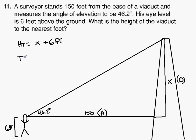So the tangent of 46.2 degrees is equal to x over 150. Okay, so to get x by itself, x is being divided by 150, so we're going to apply the inverse operation of multiplication and multiply both sides of the equation by 150.